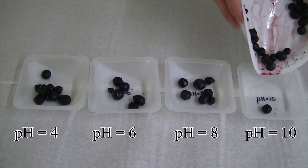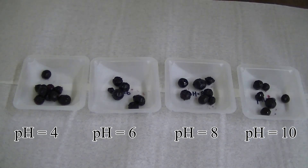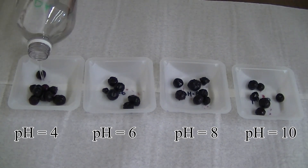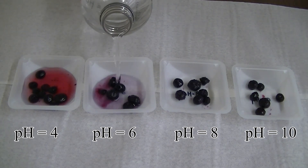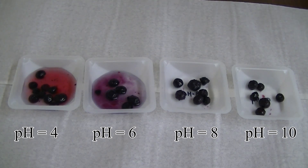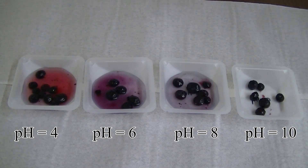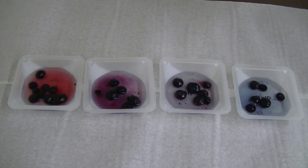Notice that pH values of 4 and 6 are acidic while pH values of 8 and 10 are basic. It looks as if the blueberry mixture appears red at pH 4, red-purple at pH 6, blue-purple at pH 8, and blue at pH 10.